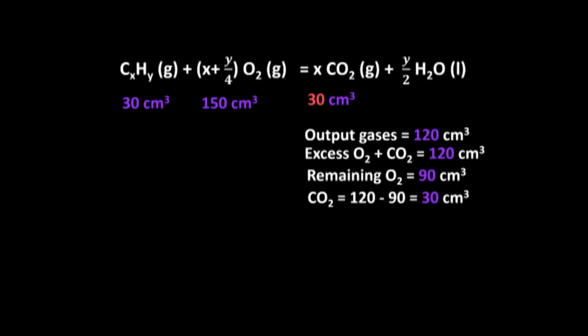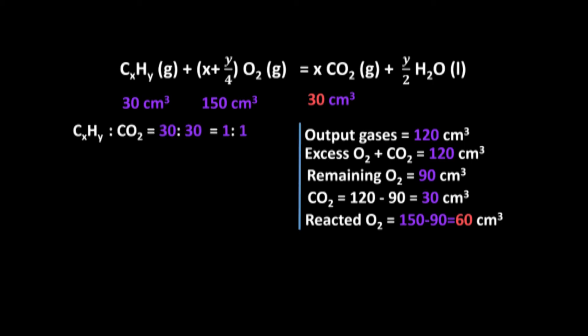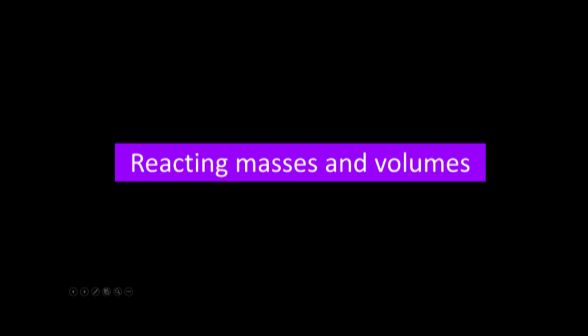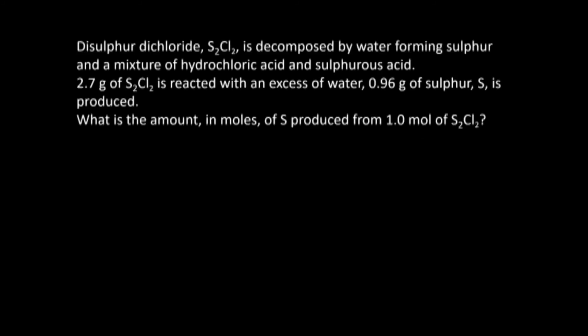From the data: excess oxygen is 90 cm³, so CO₂ produced is 120 − 90 = 30 cm³. The oxygen consumed is 150 − 90 = 60 cm³. The ratio of hydrocarbon to CO₂ is 1:1, so x = 1. The ratio of hydrocarbon to oxygen is 30:60 = 1:2, giving x + y/2 = 2, so y = 4 — x = 1. Therefore the molecular formula is CH₄.